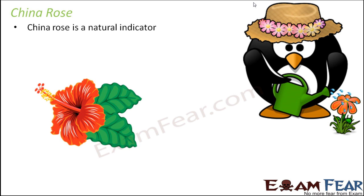They are like red colored flowers with big petals. So how do we use these flowers as an indicator? Because till now we have seen preparing the filter paper with paste of either turmeric or litmus solution. So how do we prepare a solution out of this China Rose?